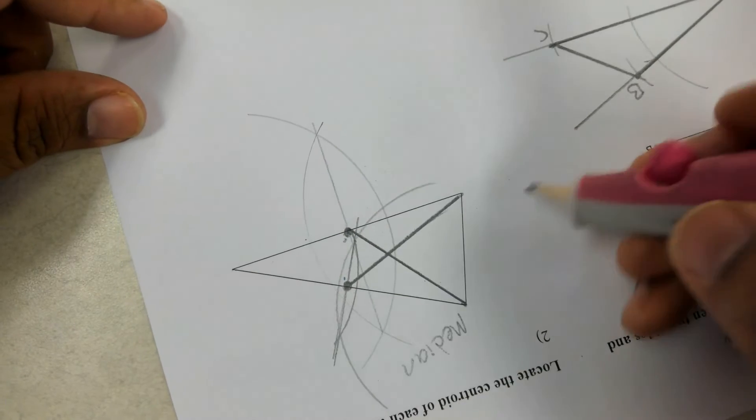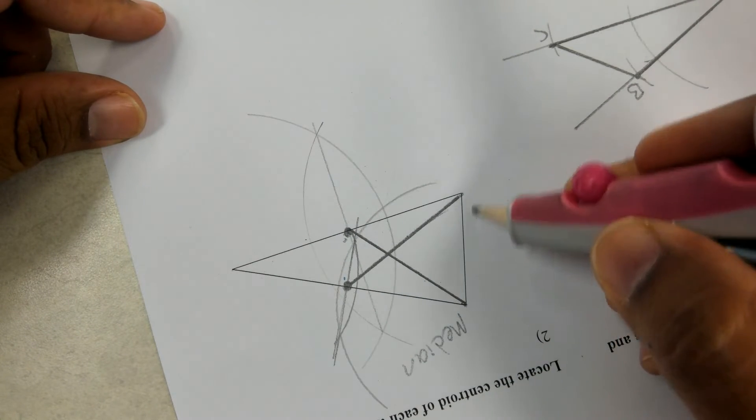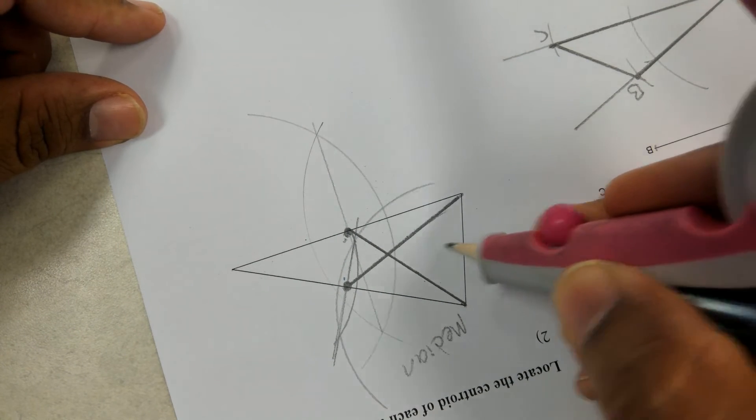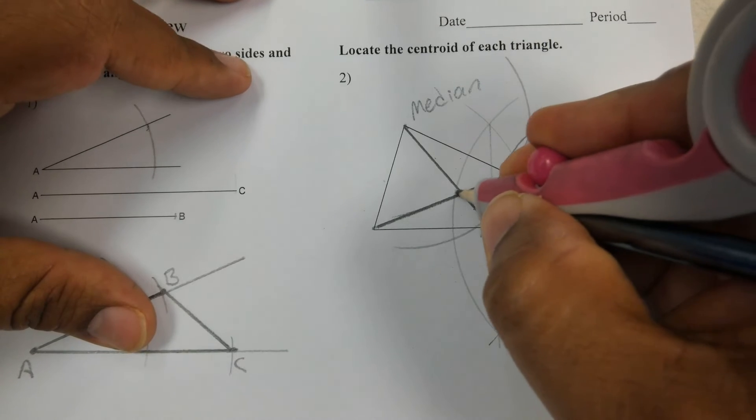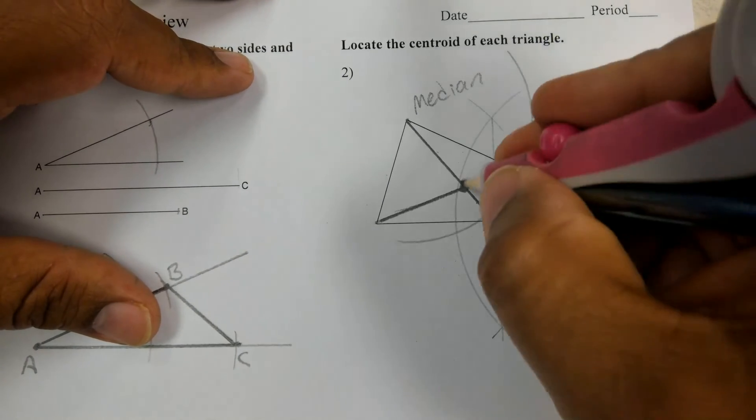I could do it to the third side - there's my third side. I could find my midpoint, connect it to the opposite corner, but two sides are enough. Two medians is enough. This point where the two medians intersect, let me label it C for centroid.